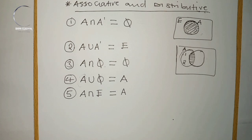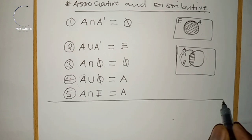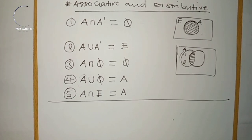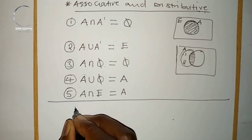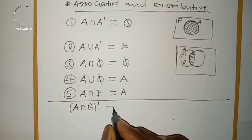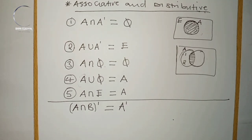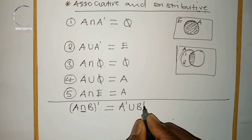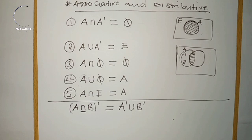Distributive property works when you distribute a complement onto sets inside brackets. When you distribute a complement across two different sets, the symbol in the middle changes — intersection becomes union, and union becomes intersection. So (A ∩ B)' = A' ∪ B'.